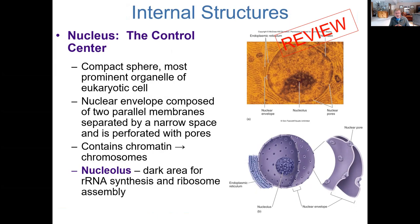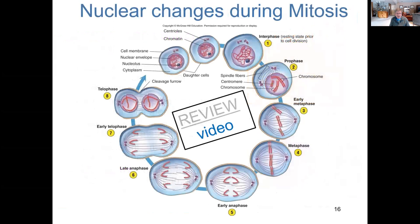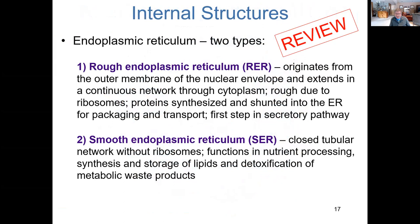Now we'll delve into the cell and talk about some organelles. I won't spend much time here since you've heard of these organelles before — please refresh your memory on the names and what they do. I'd also like you to review cell division in eukaryotic cells: the process of mitosis, which describes how the DNA is separated and replicated. The same applies to the endoplasmic reticula, both rough and smooth.